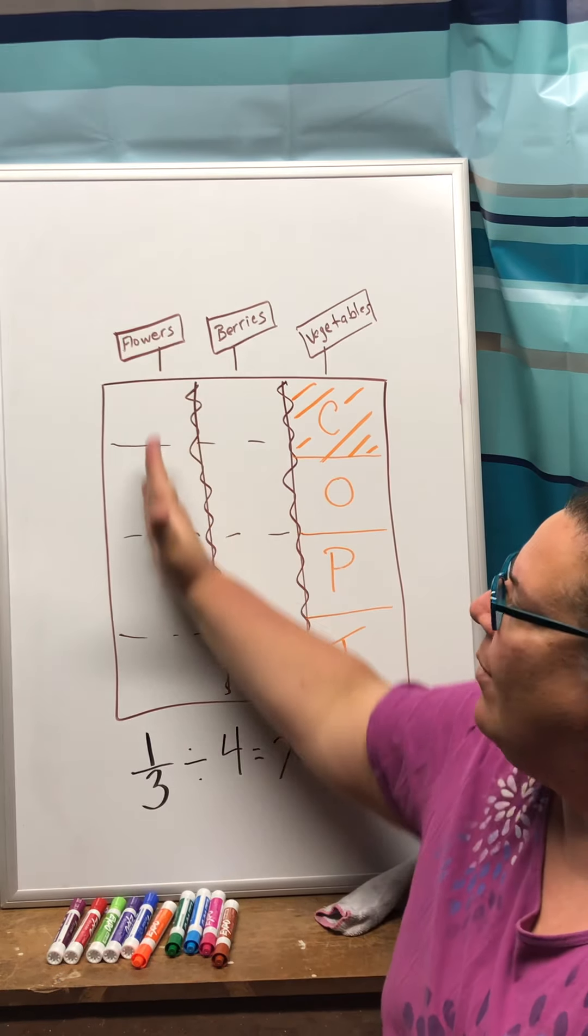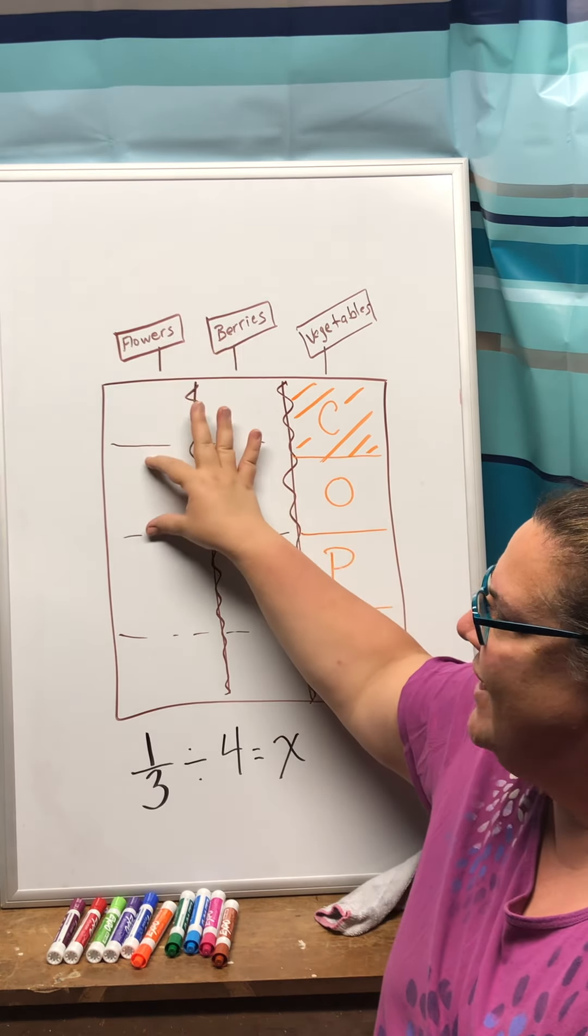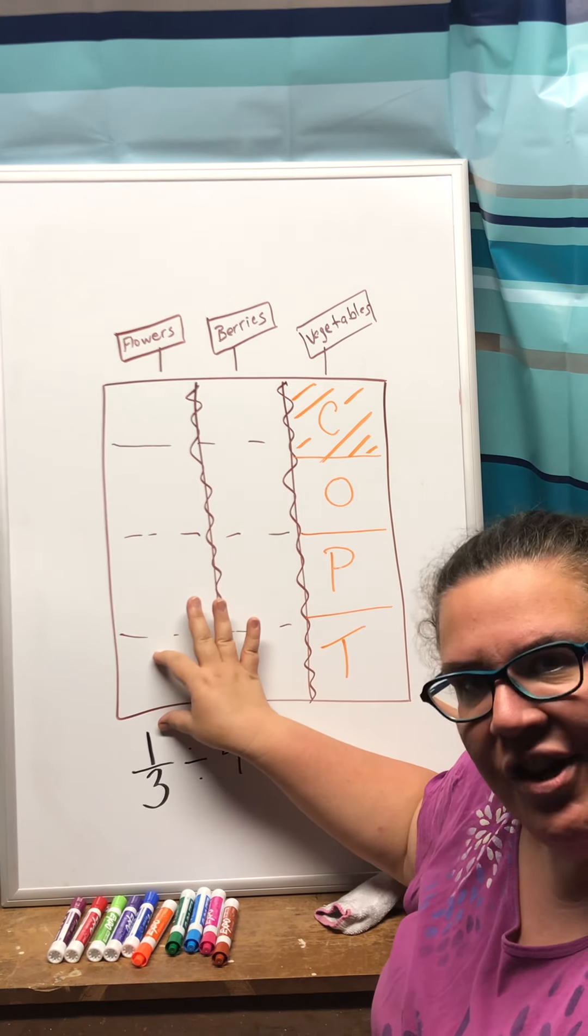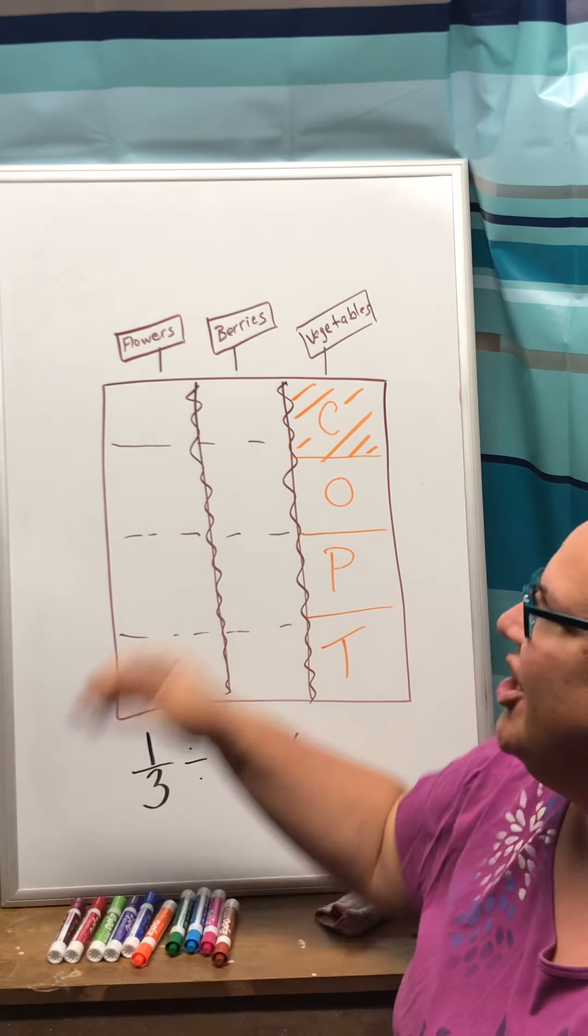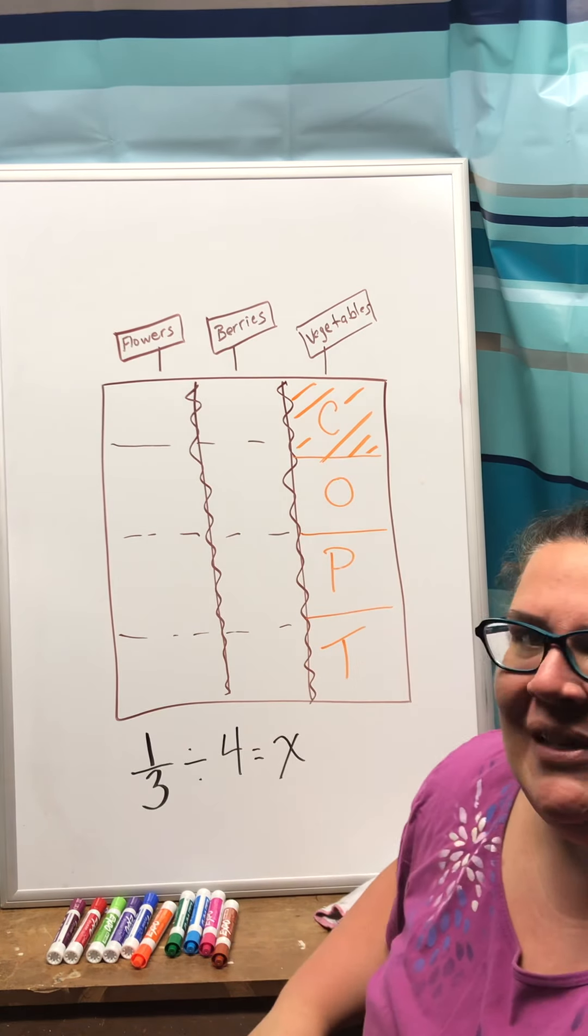Because remember we use that term fair shares. Now everything in the garden is fair shares. So even though flowers are in this whole part there's a section of flowers, a section of flowers, a section of flowers. There's four parts to that flower section, there's four parts to the berry section, there's four parts to the vegetable section.